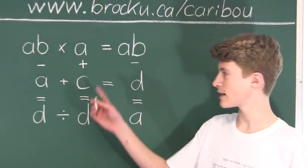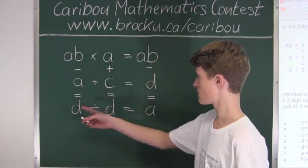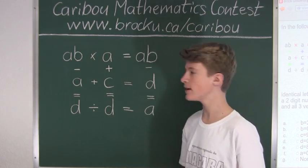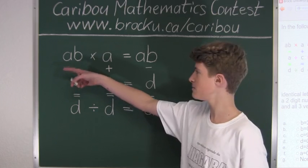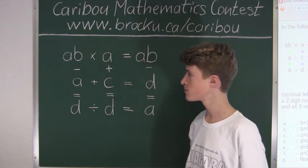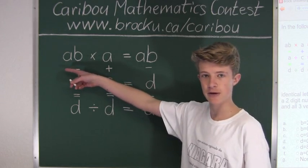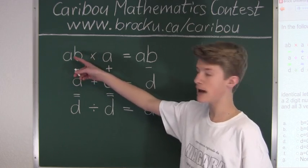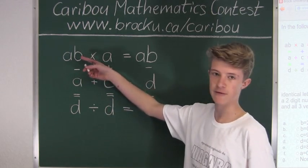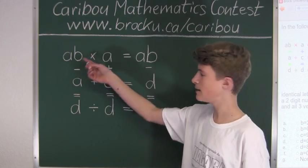In this diagram, there are six calculations: 1, 2, 3, 4, 5, and 6. When we have two digits beside each other, like AB right here, that means AB would have to be a two-digit number. So if AB was 37, for example, that means A would have to be 3 and B would have to be 7, and A would also be 3 and B would also be 7 wherever else they appear.